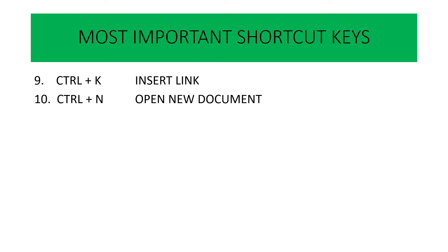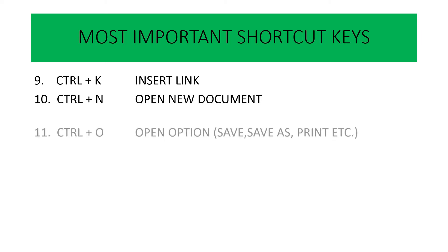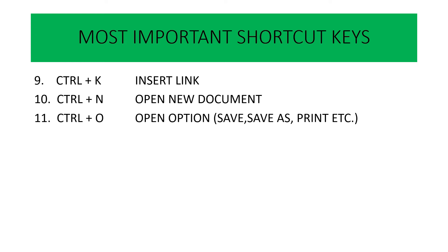Next is Ctrl N — Ctrl N is used to open a new document. कोई भी नया document open करना है तो Ctrl N का use करें. Ctrl O is used to open different types of options जैसे कि save, save as, print — अलग-अलग प्रकार के options को open करने के लिए Ctrl O का use करते हैं.